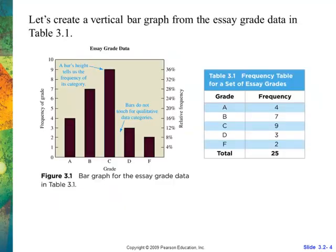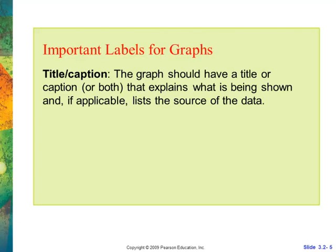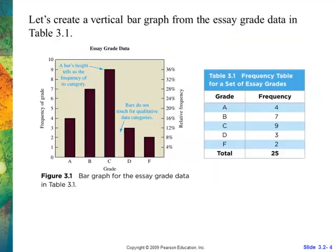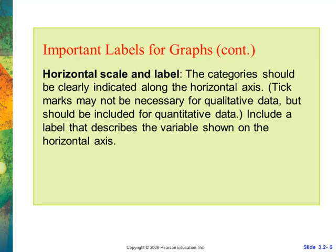So, we have to label our graphs. It's very important. Notice the graph at the top has essay grade data. On the side, it says frequency of grades, and on the bottom, it says the grade. We need to label all three pieces. Otherwise, we don't know what we're looking at. The top has a title. It should have as much information in the small number of words as possible. The vertical scale has a label, because we want to know what those numbers represent. And we also need to know how many each tick mark represents.